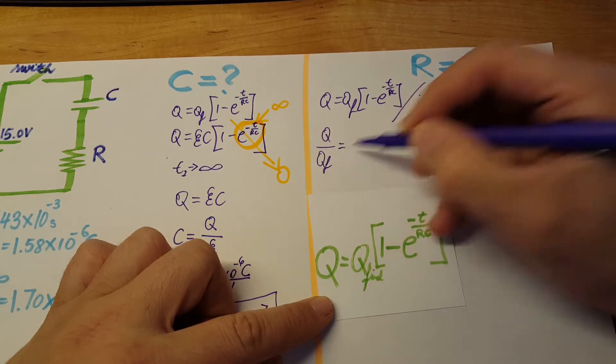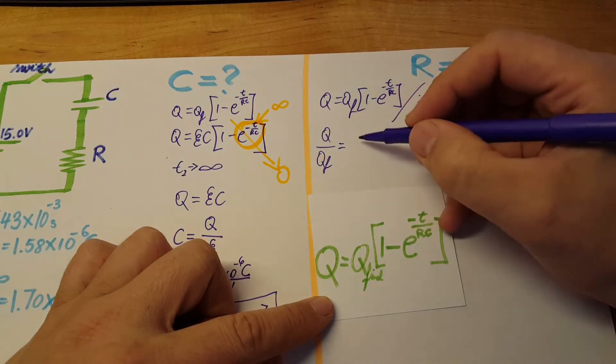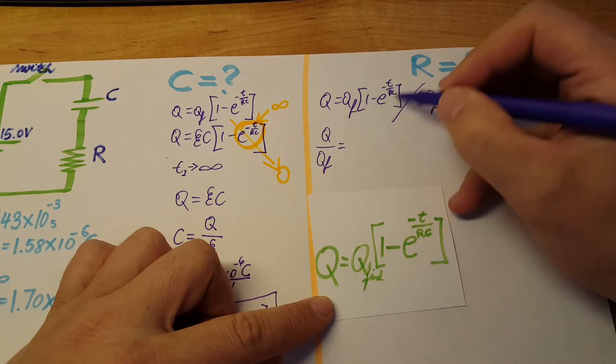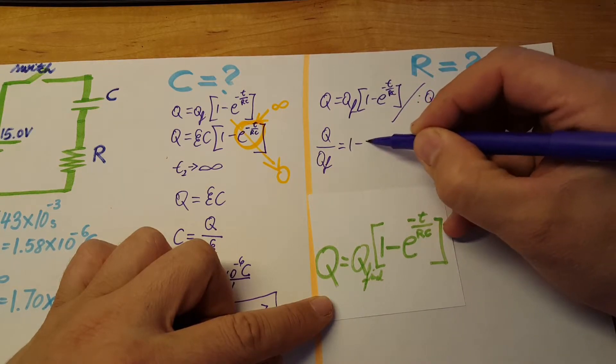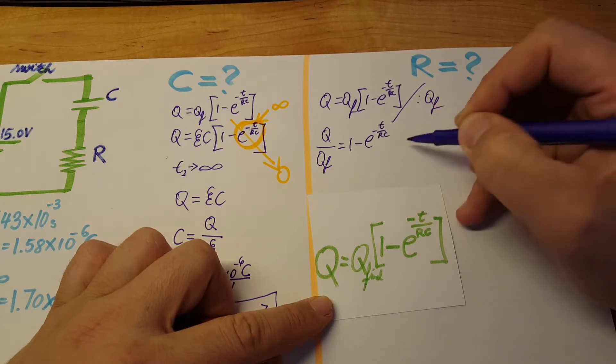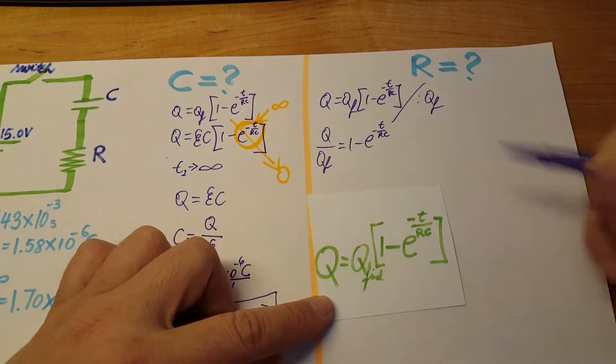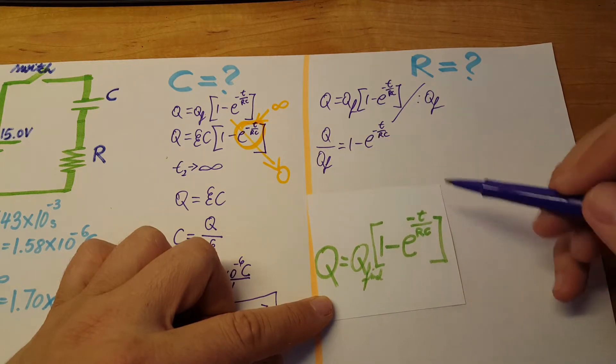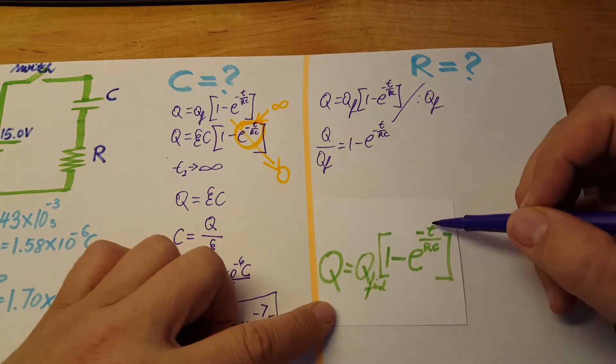So Q over Q final equals what we have left in the parentheses: one minus e to the negative t over RC. Now we're gonna take the one on the other side and multiply the whole thing by negative one.